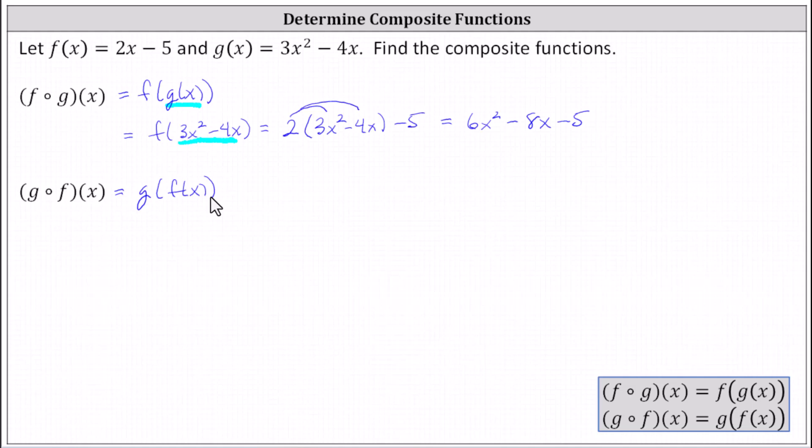Starting with the inner function f of x, again we don't have a numerical input for f of x, and therefore we substitute the function rule for f of x, which is 2x minus 5. g of f of x equals g of 2x minus 5.